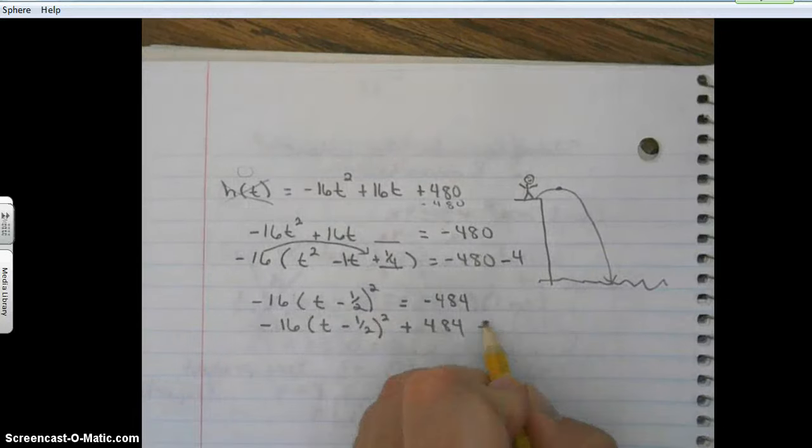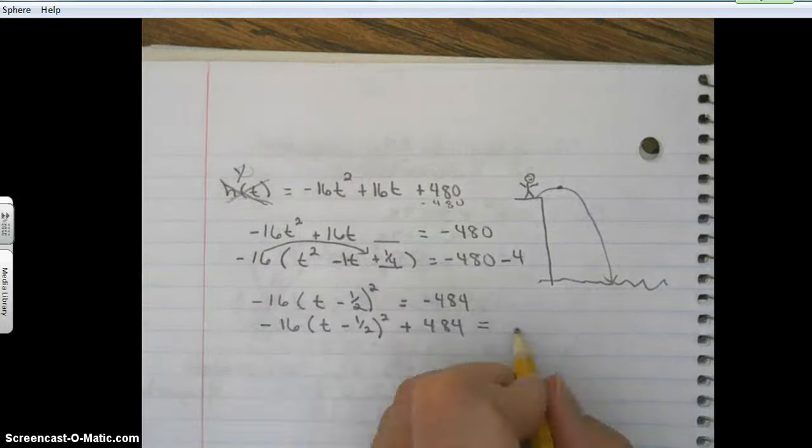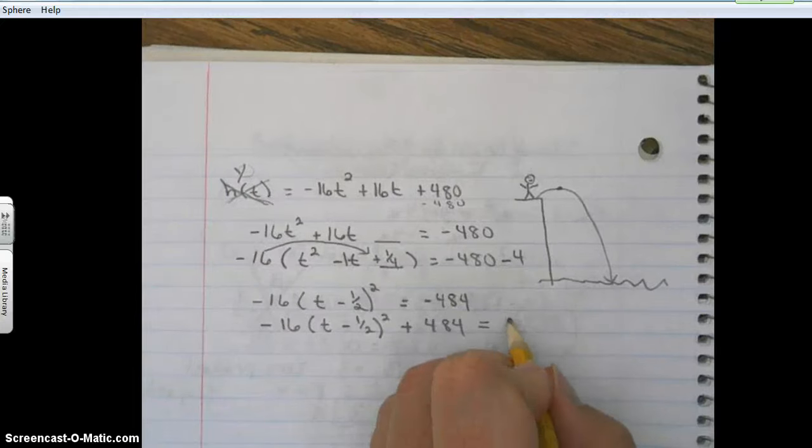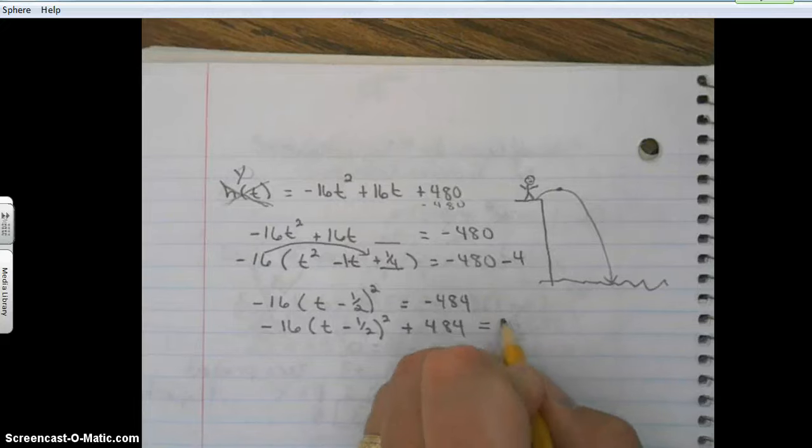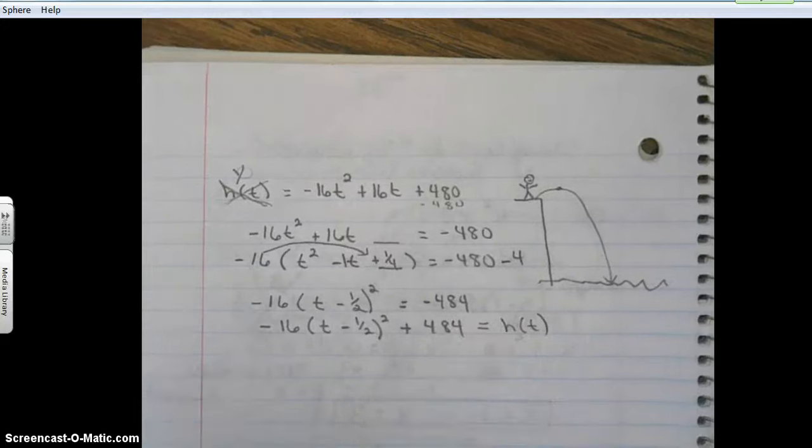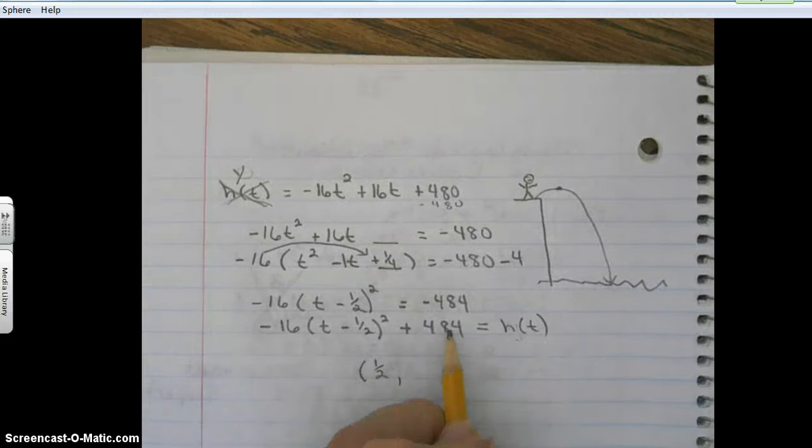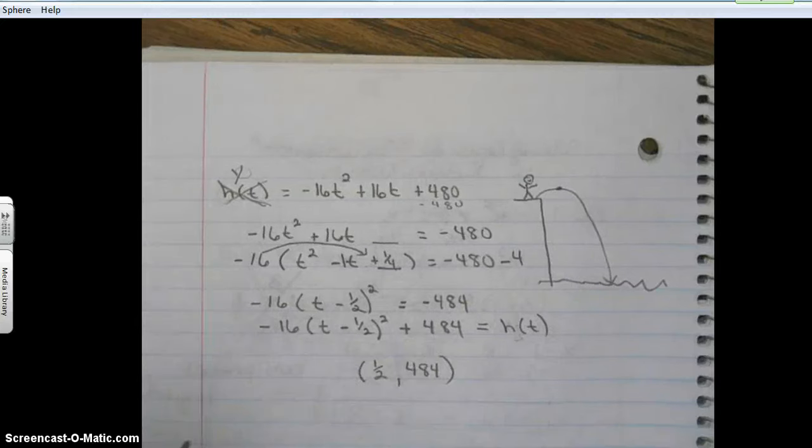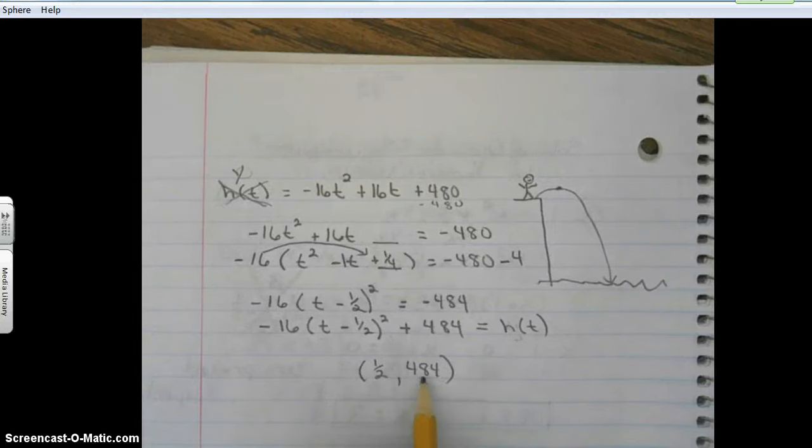Remember h(t) represents y, so we could put that h(t) back in now. Let's use h(t). So now we're in vertex form, so our vertex is one half, 484. That means that Jason in one half a second reached a maximum height of 484 feet.